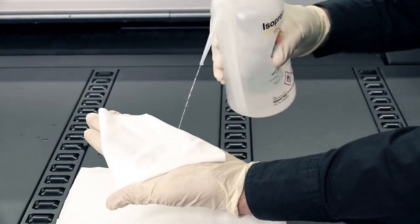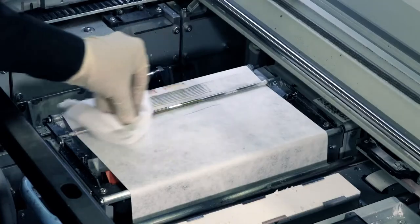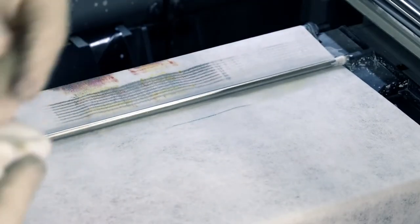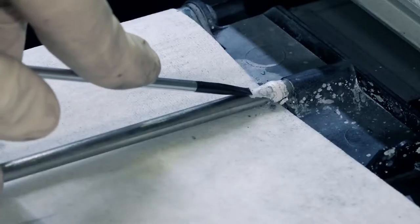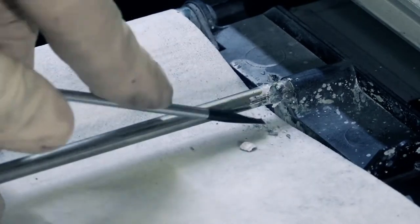Clean the printhead cleaning blade diverter and rods with a lint-free cloth dampened with distilled water. Rotate the diverter and continue cleaning the entire surface until no ink remains. Use a screwdriver to scrape any dried ink on the diverter.